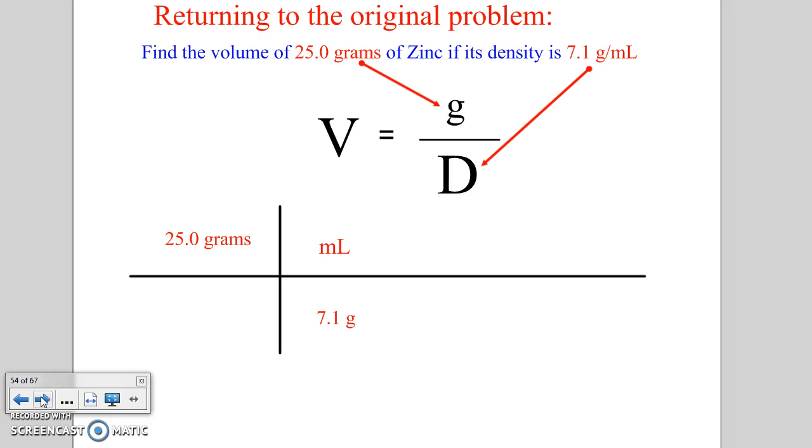That's dividing by 7.1 grams per milliliter. Grams is on top and bottom, so we can cancel that out. We're left with 25.0 divided by 7.1, that number of milliliters. However, we have only 2 sig figs in the 7.1, so we must round that to 2 sig figs, and there's our answer: 3.5 milliliters.